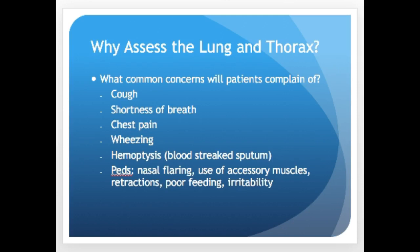Now that we've had that refresher on anatomy and physiology, let's get into the health history. Why do we assess the lung and thorax? Common complaints that should trigger a lung assessment include cough, shortness of breath, chest pain, wheezing, and hemoptysis — blood-streaked sputum. In kids you might see nasal flaring, use of accessory muscles, retractions, poor feeding, and irritability. Cough and shortness of breath are the big ones.